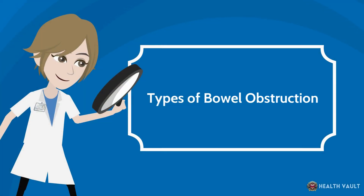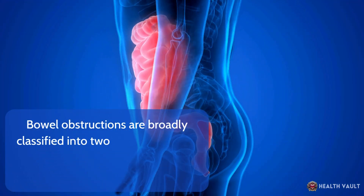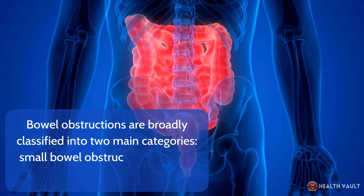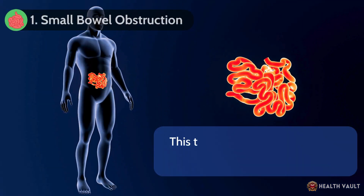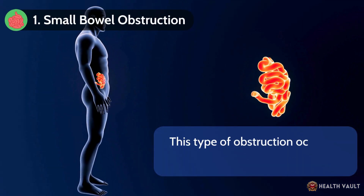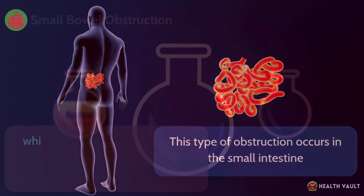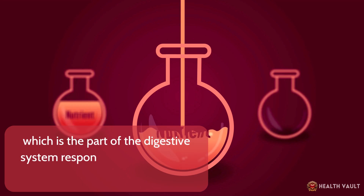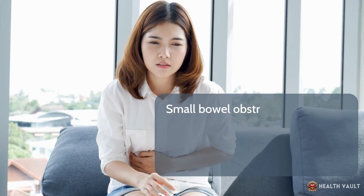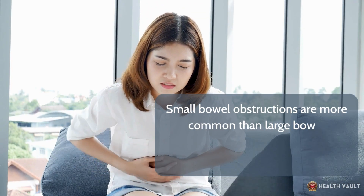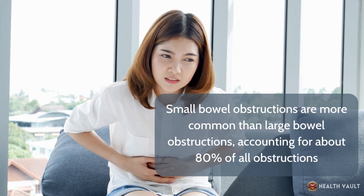Types of bowel obstruction. Bowel obstructions are broadly classified into two main categories: small bowel obstruction and large bowel obstruction. Small bowel obstruction occurs in the small intestine, which is the part of the digestive system responsible for absorbing nutrients from food, and is more common, accounting for about 80% of all obstructions.